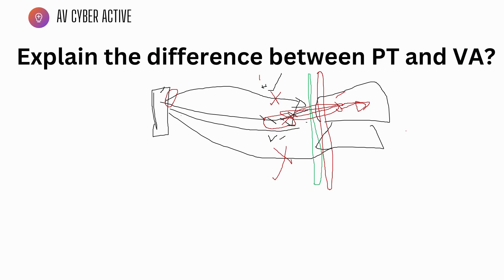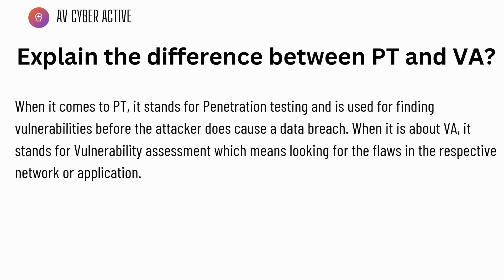When performing penetration testing, you never do it in a production environment — in organizations, especially large ones, it's always done in a development environment. To summarize in plain English: PT (penetration testing) is used to find and exploit vulnerabilities before an attacker can use them for a data breach. VA (vulnerability assessment) is the softer approach — it only looks for flaws in your network and applications and does nothing beyond that. Vulnerability assessment finds flaws; penetration testing actively exploits them.